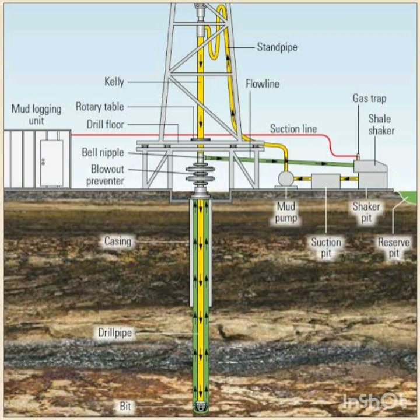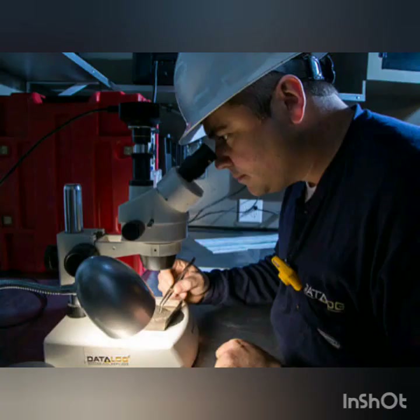The main task of a mudlogging unit is to monitor and collect all necessary information to ensure an uninterrupted drilling process. This includes the measurement of gases, mudflow rates in and out, temperatures, drill rates, depth, and pressures.